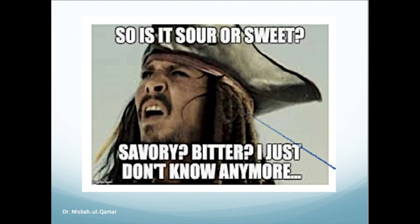Umami taste designates a pleasant taste sensation. 'Umami' is a Japanese word meaning delicious. It is a qualitatively different sensation from sour, salty, sweet, or bitter, and it serves as a marker for desirable, nutritionally protein-rich food. This taste is triggered by the presence of amino acids, especially L-glutamate — for example, meat extract or aged cheese. The receptor for this taste is a metabotropic receptor whose activation is intensified by guanosine and inosine monophosphate.